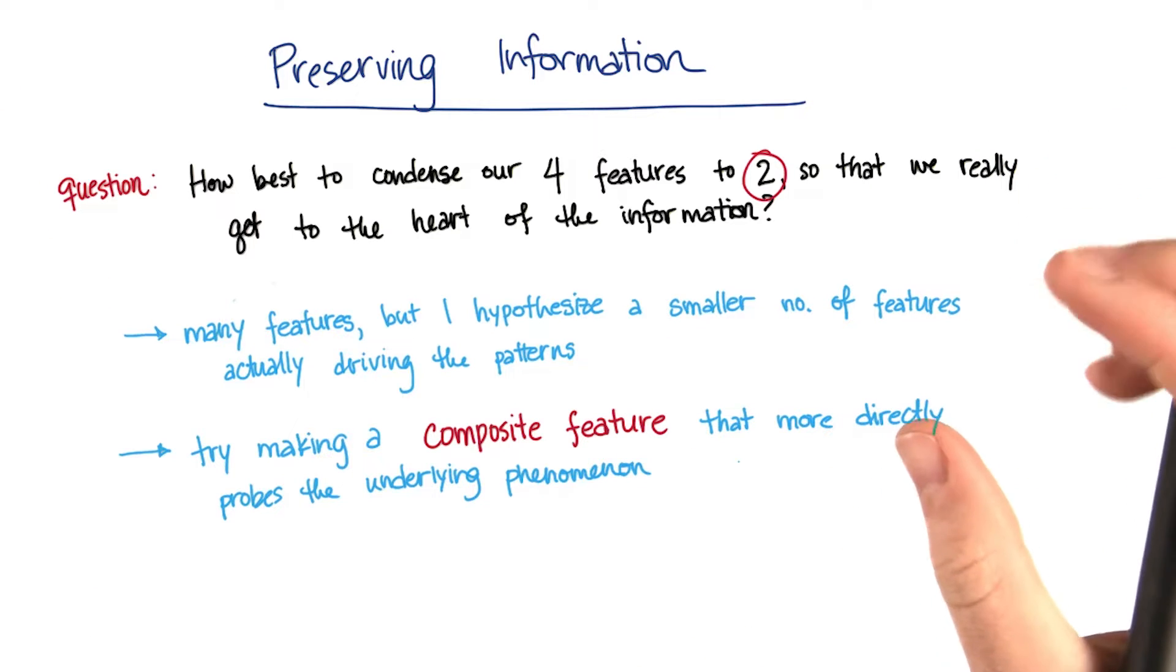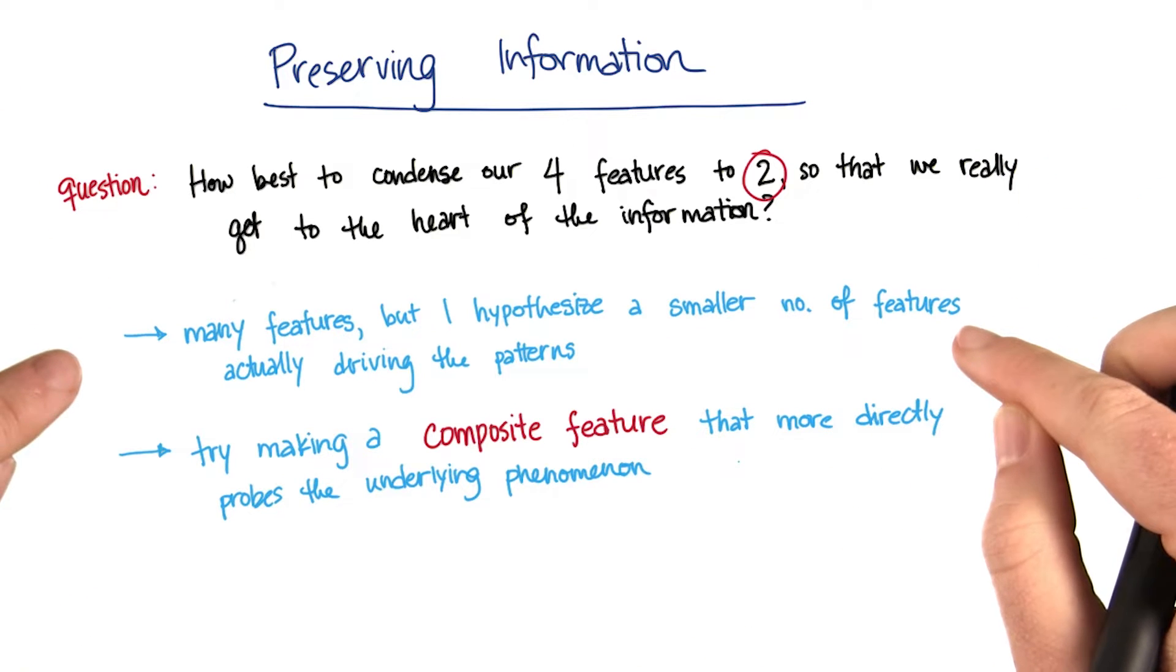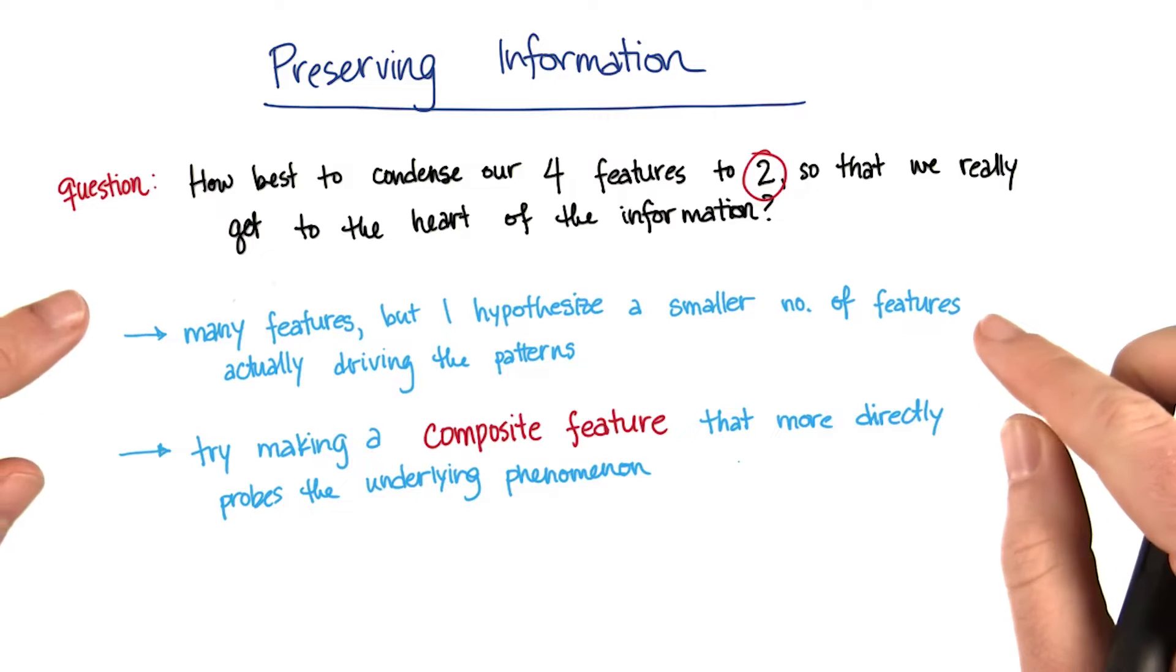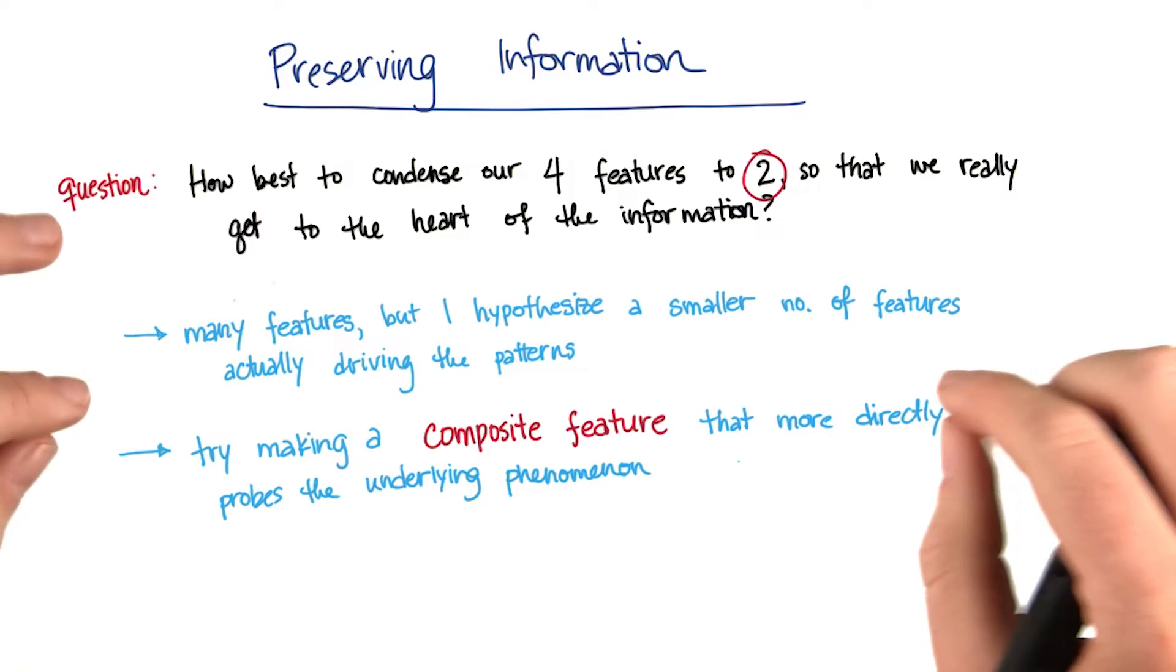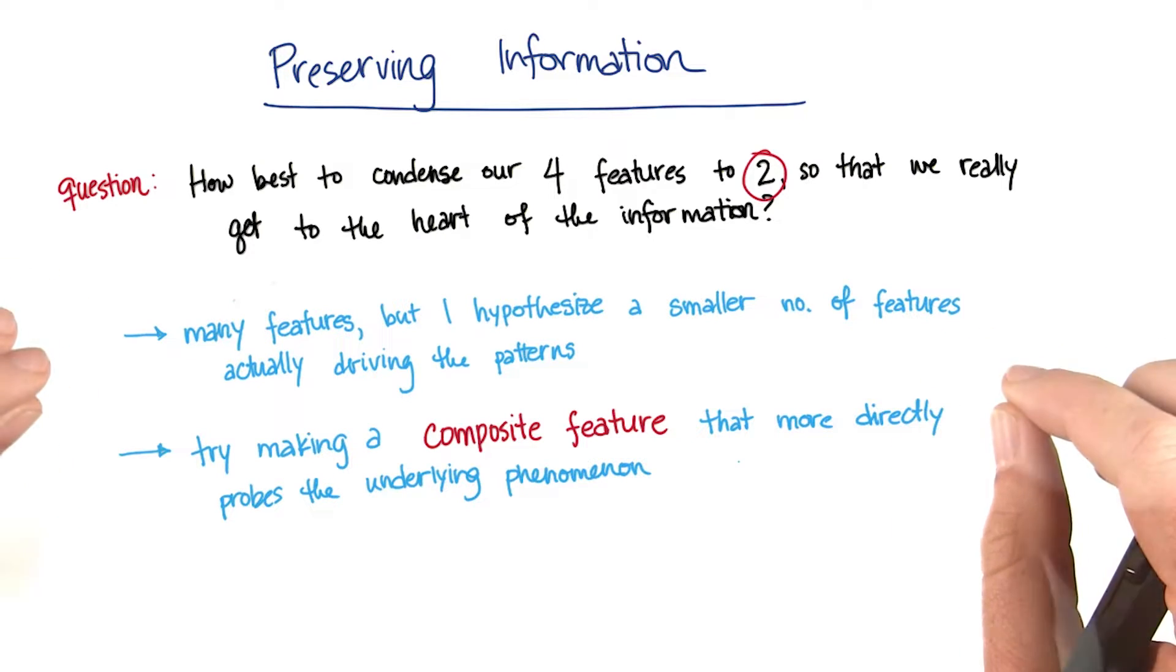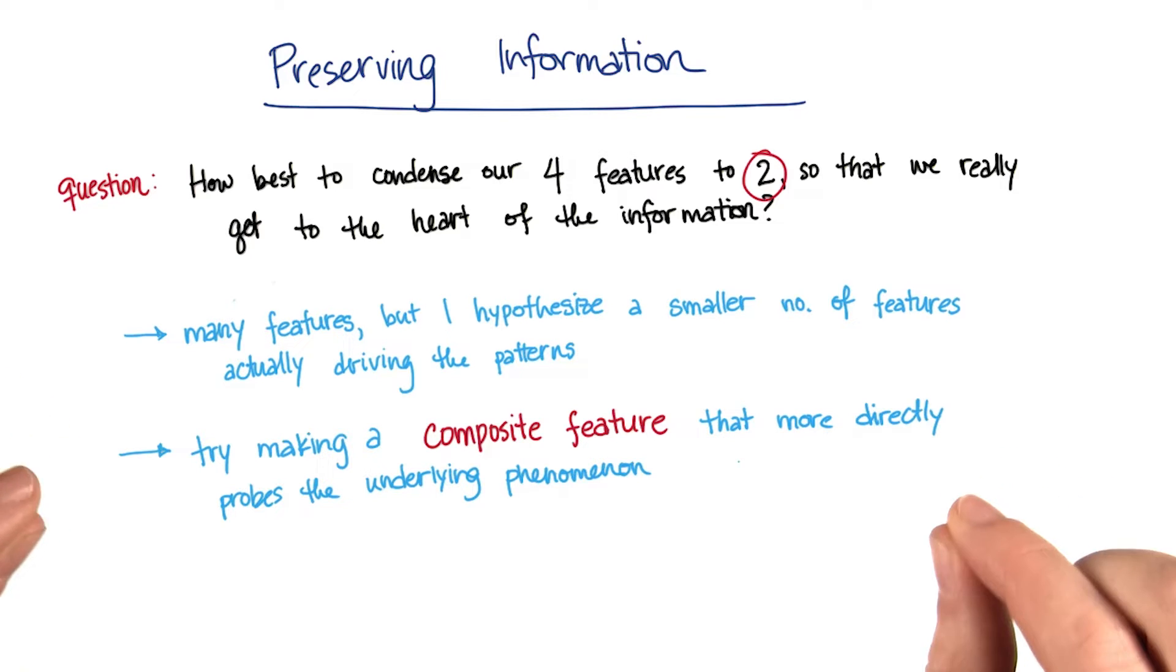So here are the two crucial ingredients. I have many features available to me, but I hypothesize that there's a smaller number of features that are actually driving the patterns in the data. And then what I do is I take that knowledge and I try making a composite feature that more directly probes the underlying phenomenon.